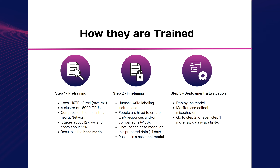Now we have the second phase, where we direct the model to perform the tasks we want. The base model can only relate words to other words — it can suggest which is the most likely word to appear next in a given sentence. However, if we want to have a chat with it, it will not be pleasant.